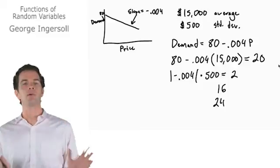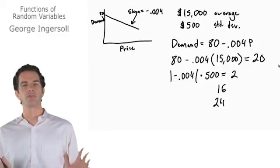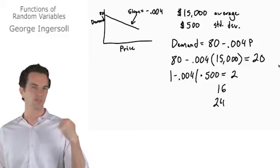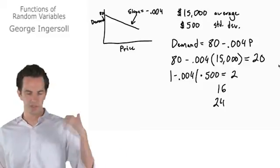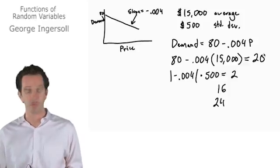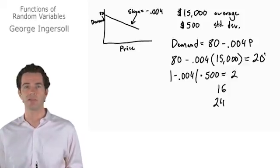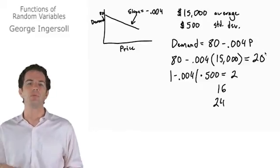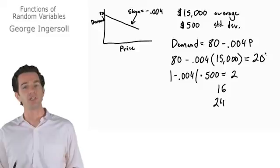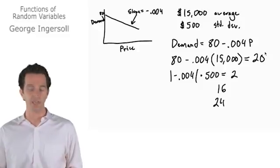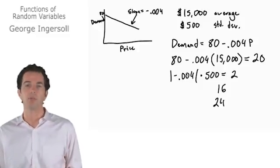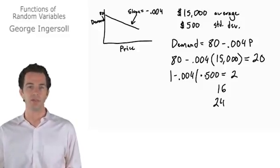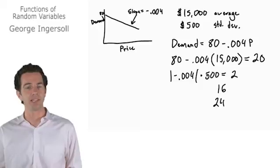The main thing to take away from functions using random variables is really just two things — it's pretty much common sense. When we want to know the expected value for the function, we just plug in the average of our random variable into the function. And when we want the standard deviation of the function, we take the absolute value of the slope and multiply it by the standard deviation of the random variable. And that's it.